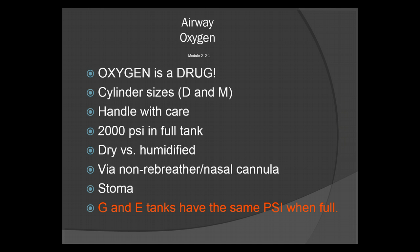Oxygen can be given either via a non-rebreather mask or nasal cannula. You can also give it for your patients with a stoma — there are specialized masks for stomas, and if not available, a pediatric mask works just fine. The G and E tanks also have the same PSI when full, however these are less common in the field.